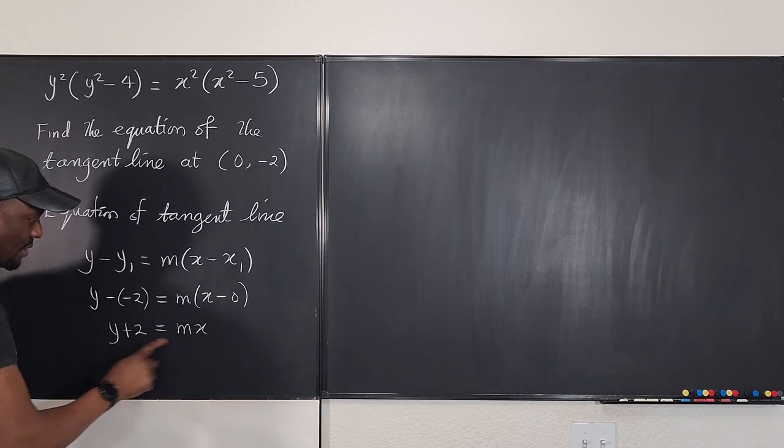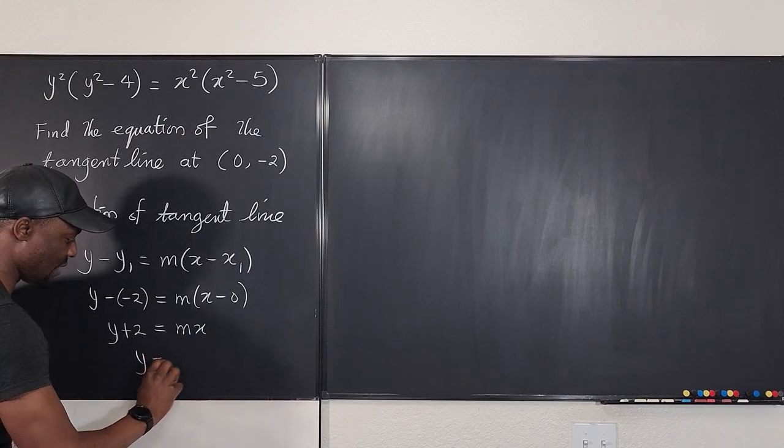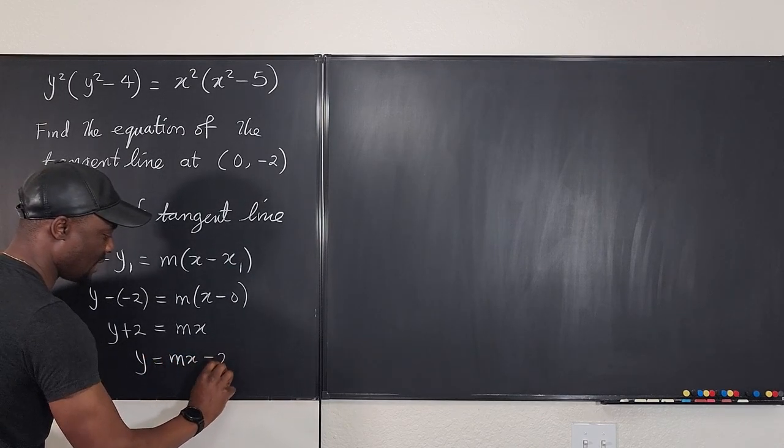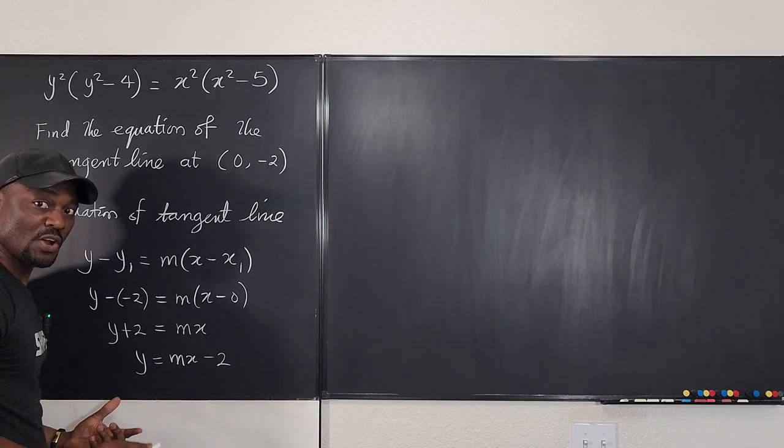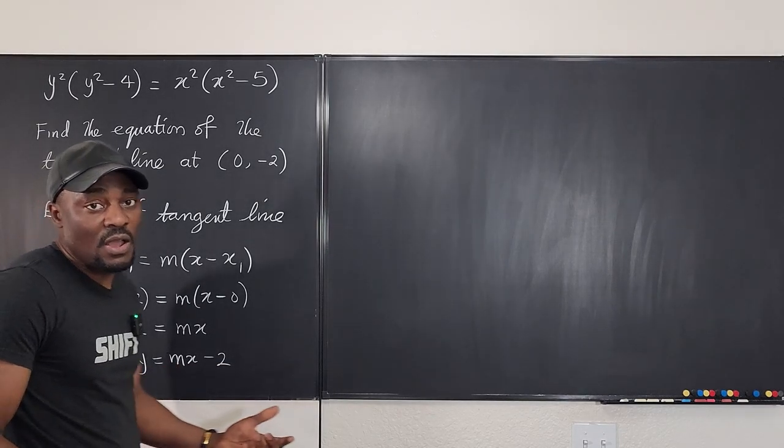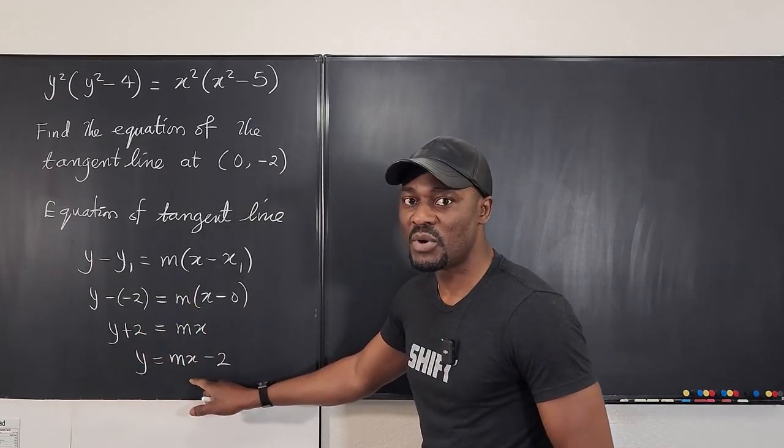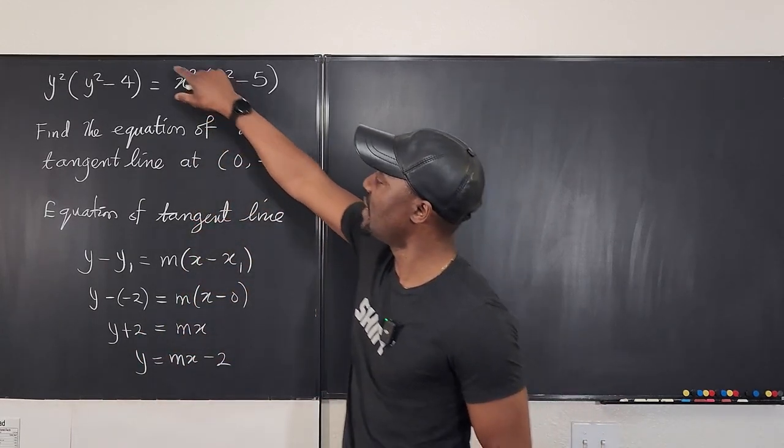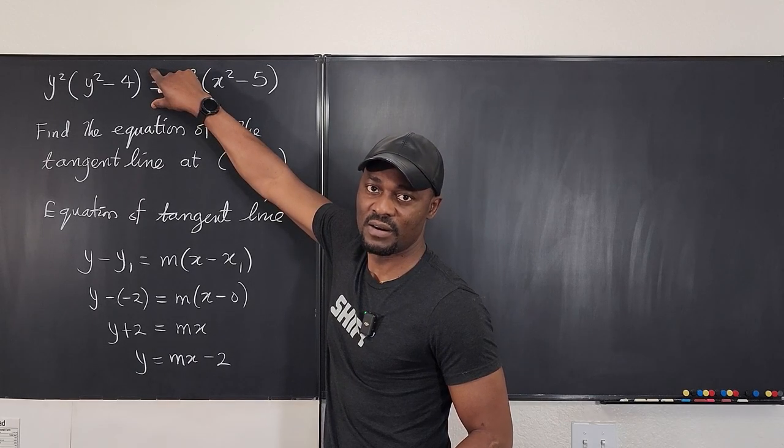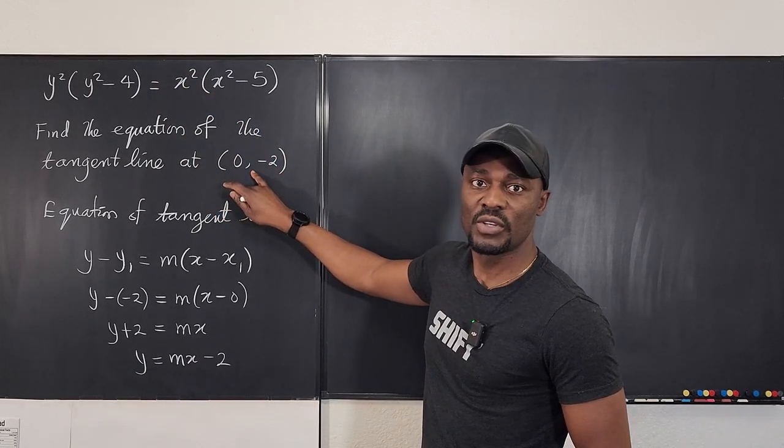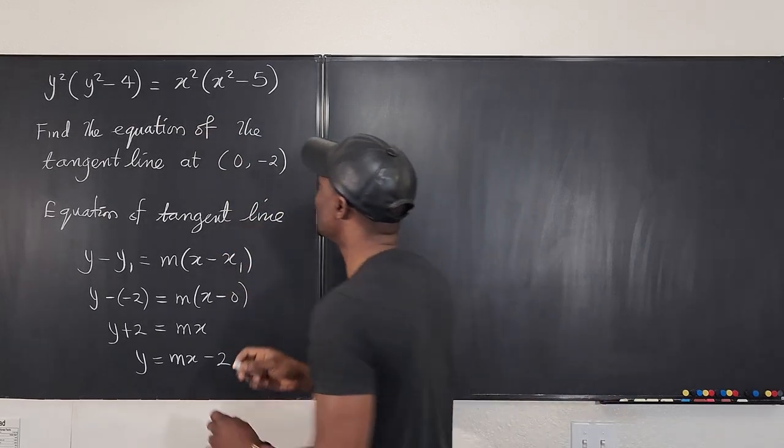Oh that's it and we can move the 2 here so that y equals mx minus 2. So this is the equation of the tangent line but we don't know what m is. And that's the only thing we need we just need to know what m is and remember m is the slope of this curve at this point. So let's go find the slope of this curve at this point.